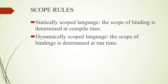Based on scope, we can classify languages into two types: first, statically scoped languages, and next, dynamically scoped languages. In a statically scoped language, the scope of binding is determined at compile time. In a dynamically scoped language, the scope of binding is determined at run time.